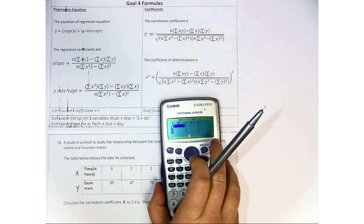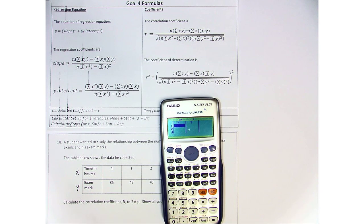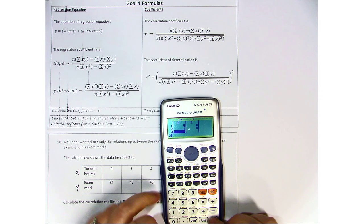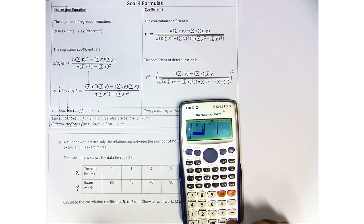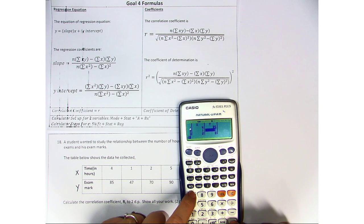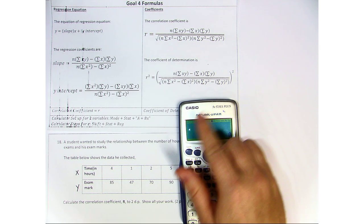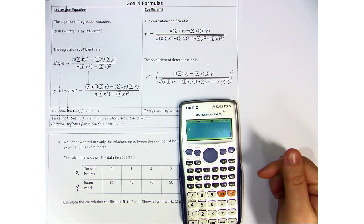So we're going to go ahead and put this into our calculator. X is 4, 1, 2, and 5. We go back up to the top. Y is 85, 47, 70, and 90. We go back to our main screen before doing any of our data.